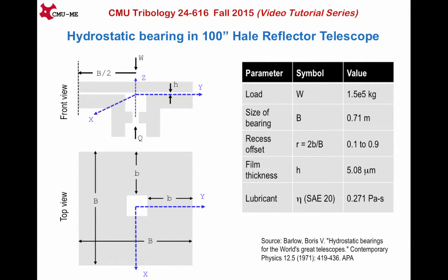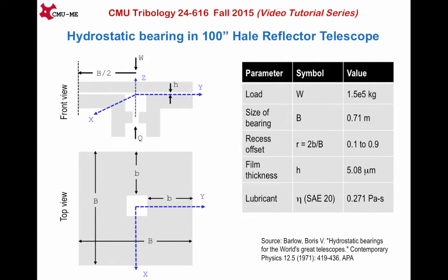This 100-inch Hale reflector scope makes use of square hydrostatic bearings as shown in the schematic on the left. The upper left diagram shows the front view of the bearing and the lower one shows the top view. Axes are oriented as shown in these diagrams. Q stands for the flow rate. The table on the right shows the real parameters for these square bearings. W stands for the load on the bearing. Uppercase B denotes the size of the square bearing. Lowercase b is the sill length of the bearing and H is the assumed film thickness. The lubricant used in these bearings is SAE20 oil. The data is obtained from the work of Parlow.